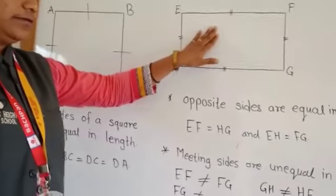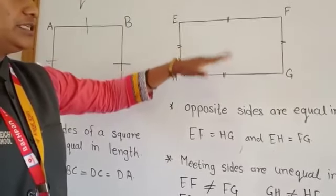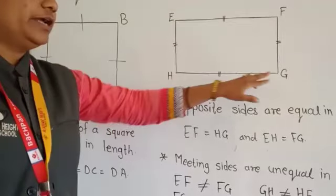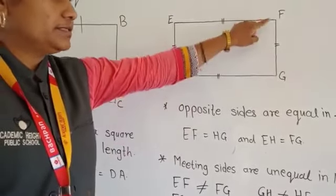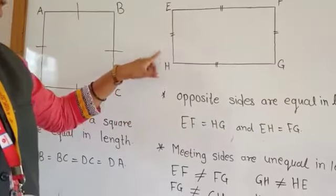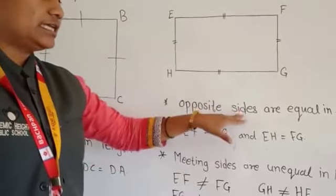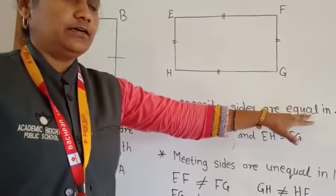But in a rectangle, look at this rectangle, opposite sides are equal. Means EF is equal to HG, and these are the opposite sides. FG and EH are also opposite sides. So EH is equal to FG. Means opposite sides of a rectangle are equal in length.